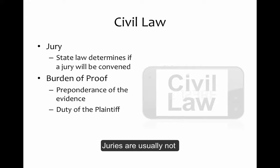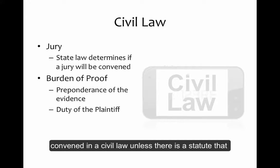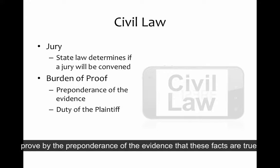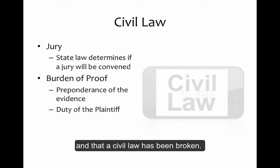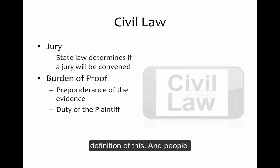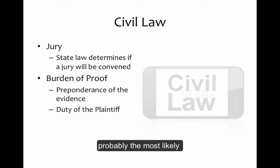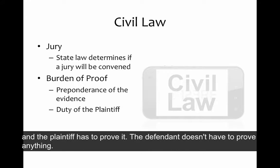Juries are usually not convened in civil law unless there is a statute that permits it. The burden of proof is preponderance of the evidence. The plaintiff has to prove by the preponderance of the evidence that these facts are true and that a civil law has been broken. Judges don't like giving a percentage, but it's at least 51% — the most likely scenario. The plaintiff has to prove it; the defendant doesn't have to prove anything.